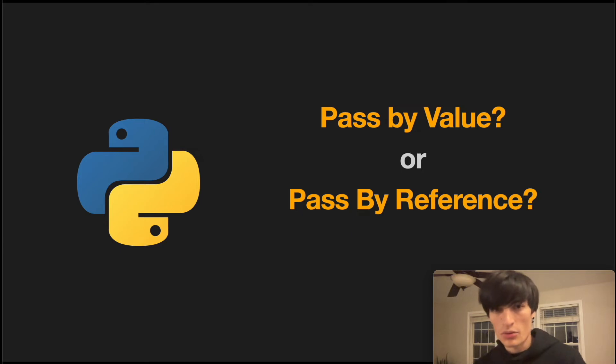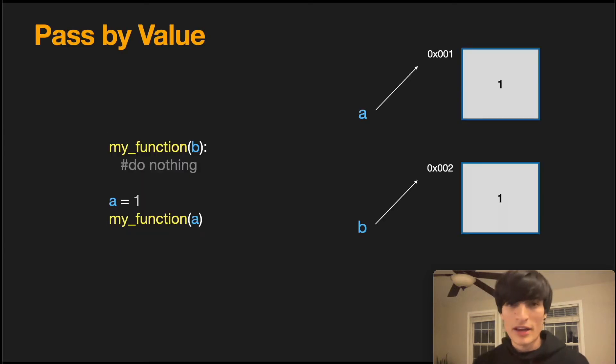So is Python a pass-by-value or a pass-by-reference language? In a pass-by-value language, when we call my function, we're going to create a variable b which points to an entirely new address which holds the same value. What this means is if we change variable a or b, those changes will not be reflected within the other variable.